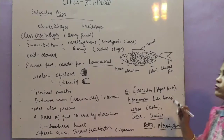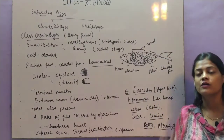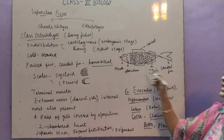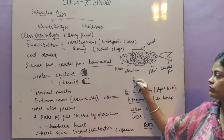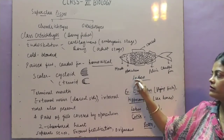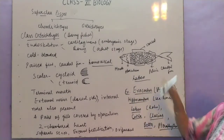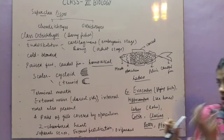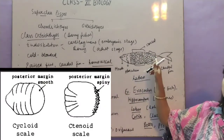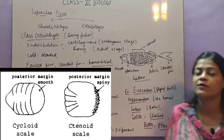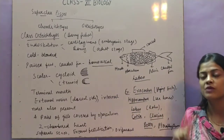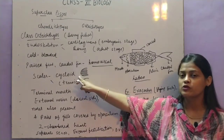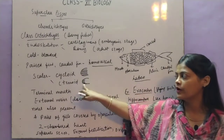Homocercal means the two parts are equal, whereas heterocercal means the two parts are not equal. In Osteichthyes, the caudal fin is homocercal. The scales can be either cycloid type or ctenoid type, which have different arrangements — different from the placoid scales found in Chondrichthyes.